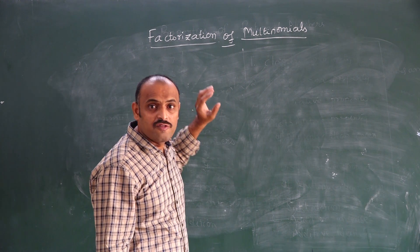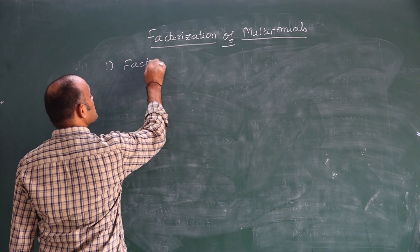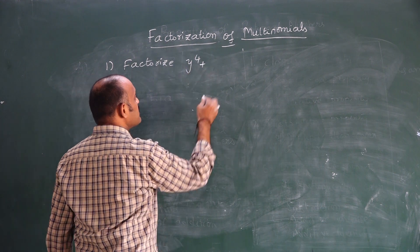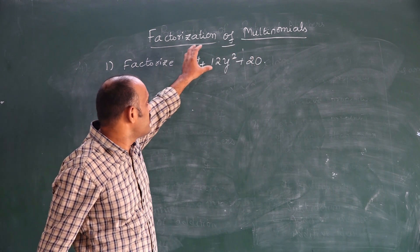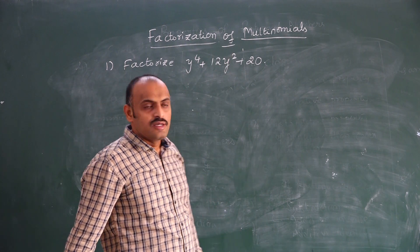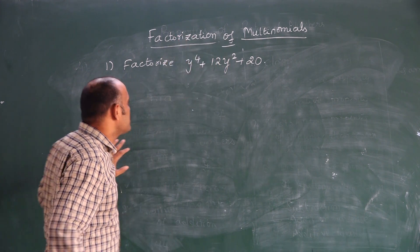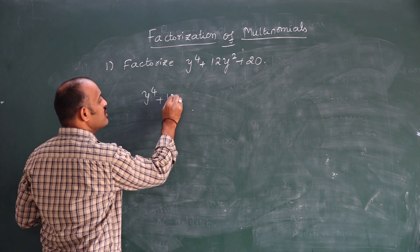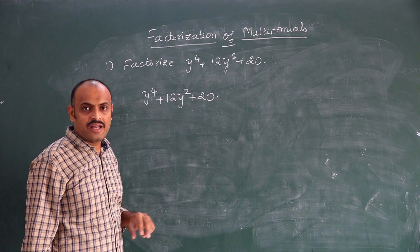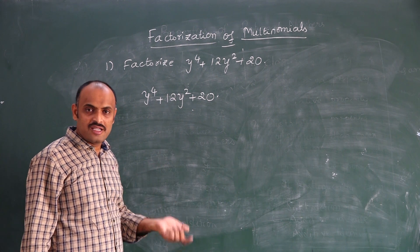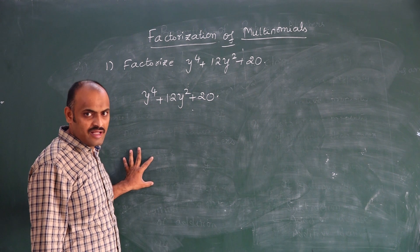With the help of examples we can find the method to solve this question. First, factorize y⁴ + 12y² + 20. It is a polynomial with degree 4. We can factorize directly, or we can convert it into another variable so that it will be reduced into a quadratic expression, and then we factorize.